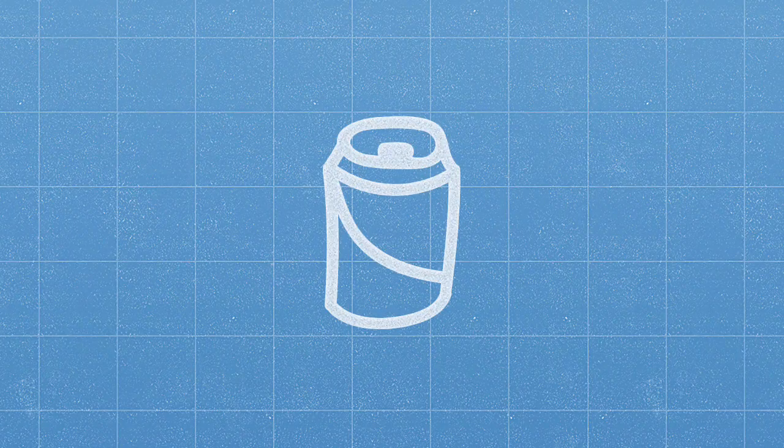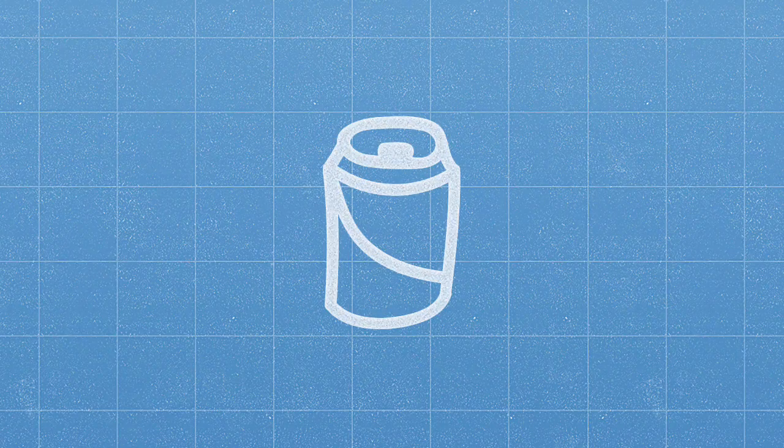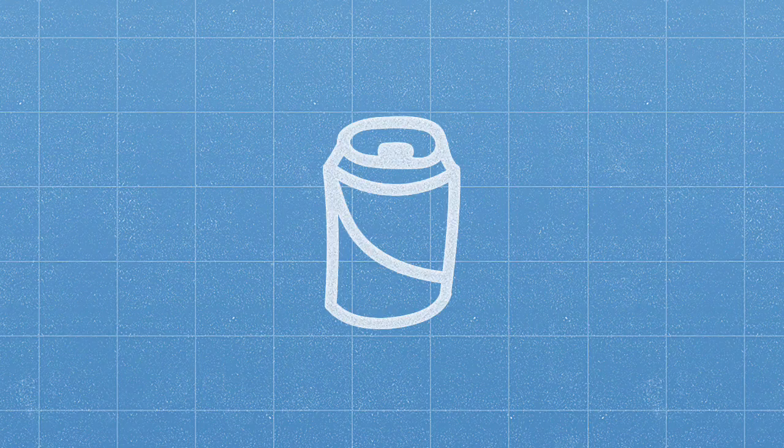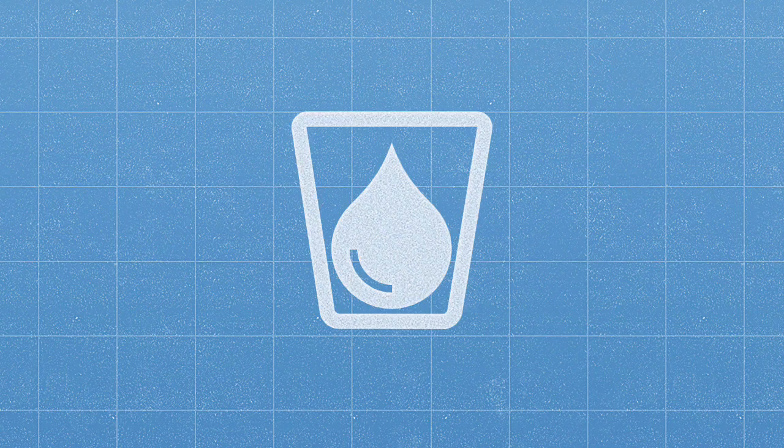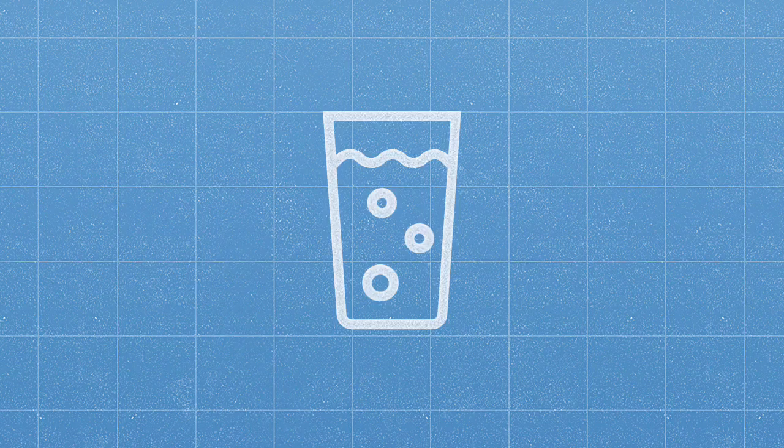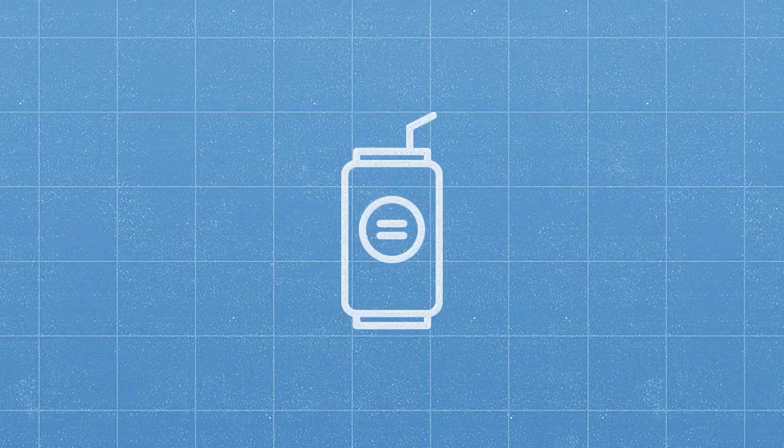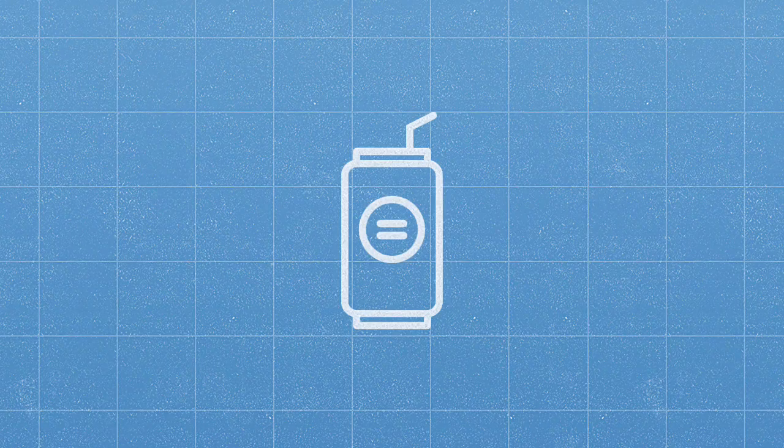Sugary drinks are one of the main contributors to excess sugar consumption amongst children and adults in the UK. To reduce your sugar intake, you could swap sugary soft drinks for water, lower fat milk, or sparkling water with a splash of unsweetened fruit juice, or choose diet, sugar-free, or no added sugar varieties.